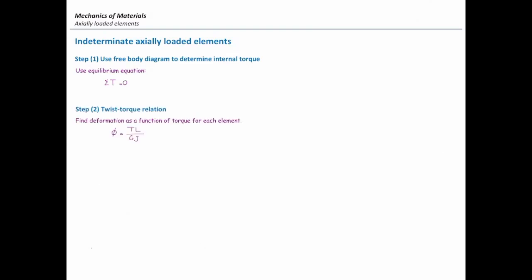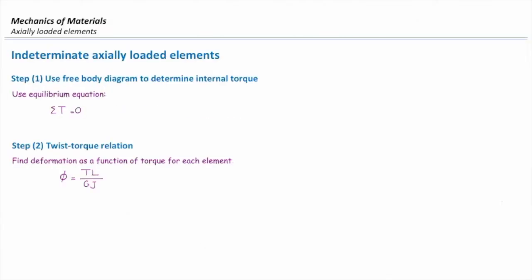In the second step, we write a relation between twist and torque. So twist is TL over GJ. Generally, everything in this equation is known but torque. So phi is torque times length divided by GJ, and we can simplify that into a form of torque divided by a number or torque multiplied by a number.